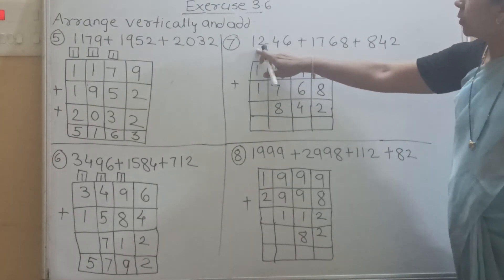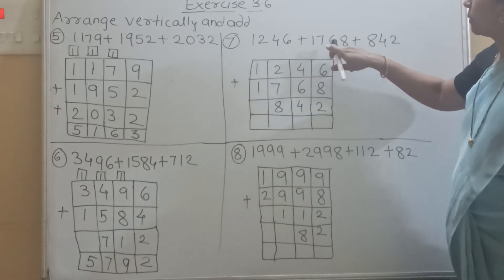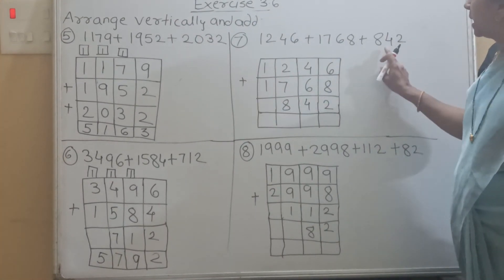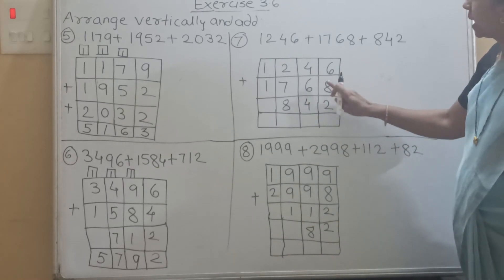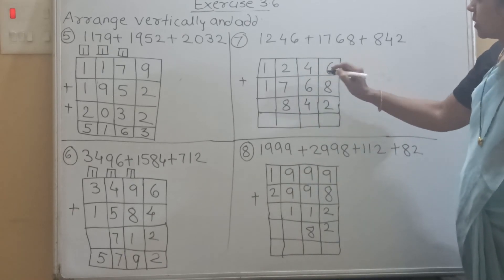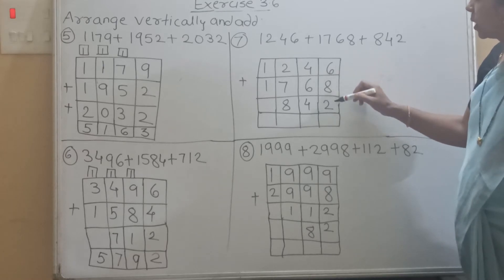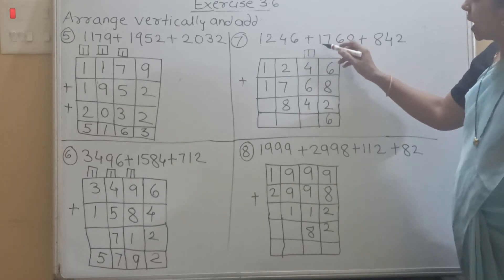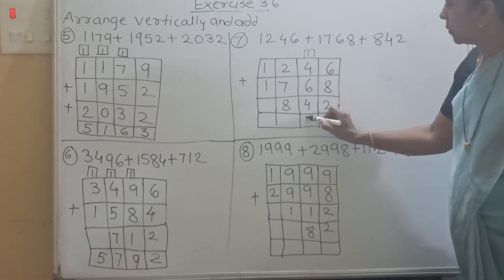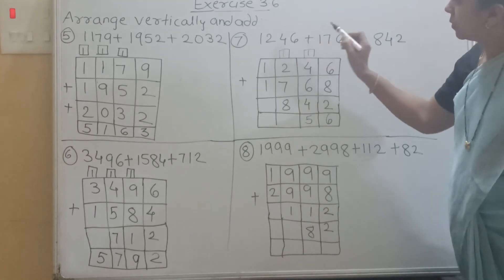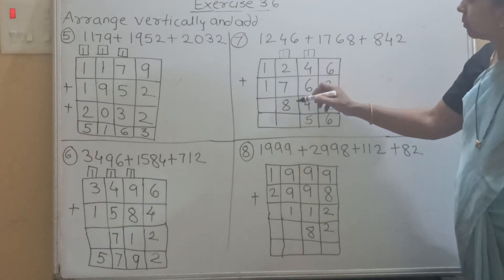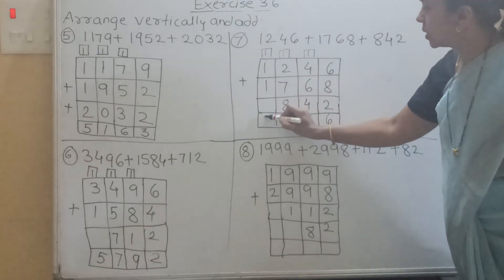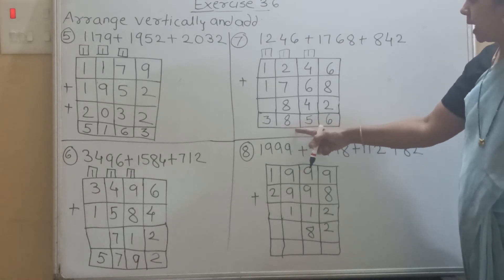Now see the seventh question: 1246 plus 1768 plus 842. Again, 842 is a three-digit number, so write it aligned starting from ones, tens, hundreds. So 8 plus 6 is 14, 14 plus 2 is 16. Write down 6, carry 1. Then 4 plus 1 is 5, 5 plus 6 is 11, 11 plus 4 is 15. Write down 5, carry 1. Then 2 plus 1 is 3, 3 plus 7 is 10, 10 plus 8 is 18. Write down 8, carry 1. Then 1 plus 1 is 2, 2 plus 1 is 3. So the answer is 3856.